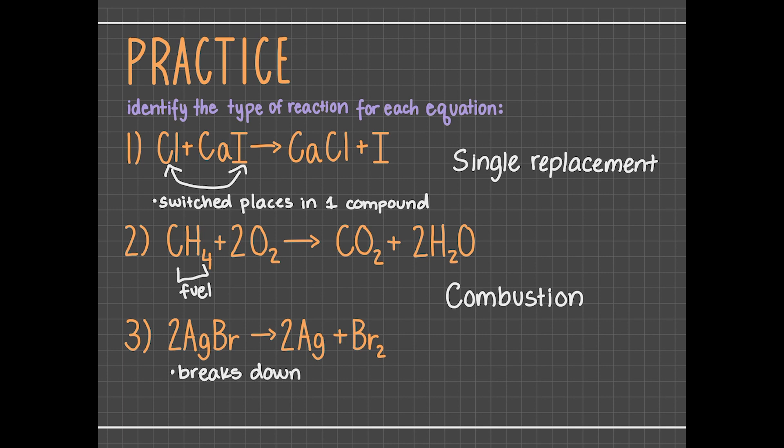In our last problem, silver bromide produces silver and bromine. We can see that silver bromide is a compound, while silver and bromine are simpler materials. So silver bromide is breaking down, or decomposing, into silver and bromine. So this is a decomposition reaction.